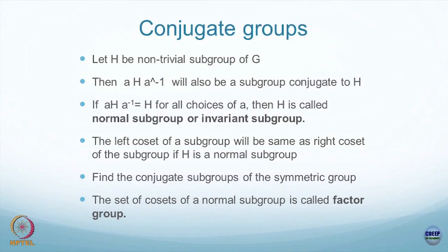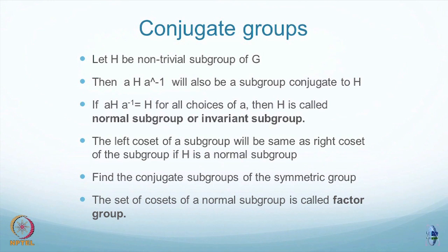Finding A H A inverse will give you a subgroup conjugate to H. Start with a group with a subgroup and generate other conjugate groups out of it. If conjugation gives you the same subgroup — in this context H2 — then you say that subgroup is a normal subgroup or an invariant subgroup.